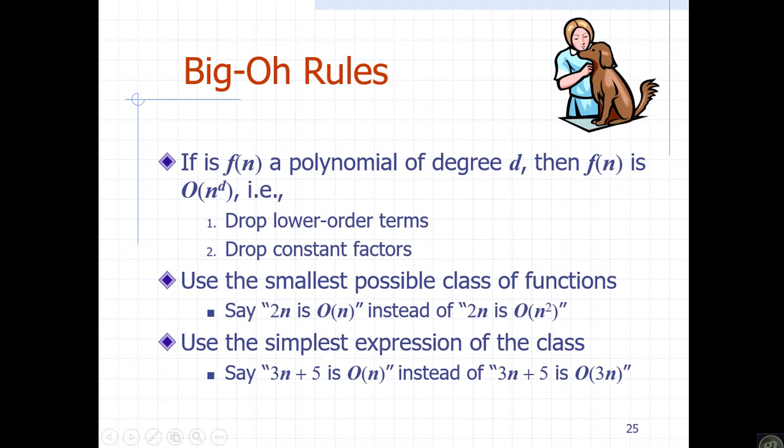For example, if f of n equals 3n plus 5, we apply the Big O rules. First, drop the low-order constant term — drop the 5. Then drop the constant factor 3 from 3n. So 3n plus 5 is Big O of n.